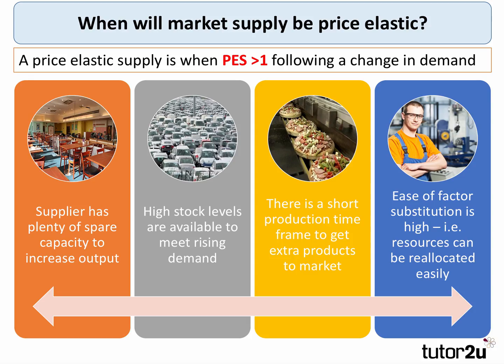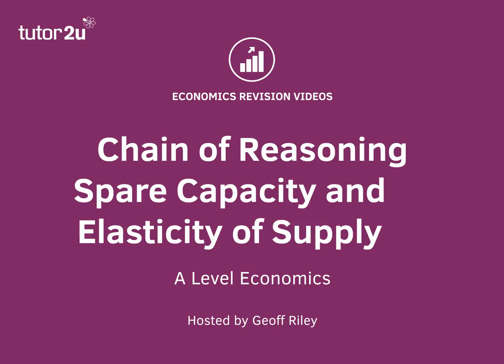We've focused on spare capacity in this video, but keep in mind there are several other factors that affect elasticity of supply. Another key one is the level of stocks available for firms to bring to market if there's a change in demand, and the time frame it takes to get products to market — for example, Domino's Pizza responding to an increase in online demand. Crucially, there is also the ease and cost of factor substitution: if a business produces a range of products, how easily can they switch capital and labour to increase production of a product whose demand is rising?